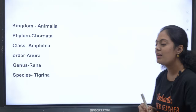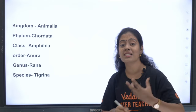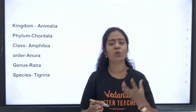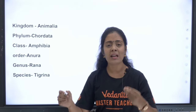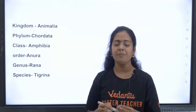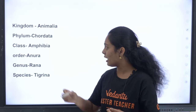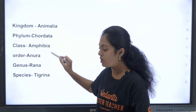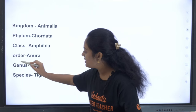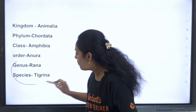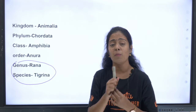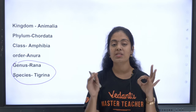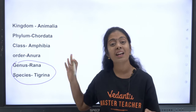Let's understand the classification of the frog. They belong to Kingdom Animalia, Phylum Chordata, Class Amphibia, Order Anura, Genus Rana, Species tigrina. The most common species of frog found in India is Rana tigrina, and that is what our textbook studies.